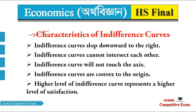Now we move to the characteristics of the indifference curve. The first characteristic: the indifference curve slopes downward from left to right, or downward to the right. This means as we move along the curve, it goes from upper left to lower right.